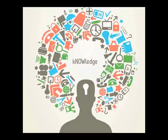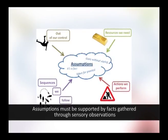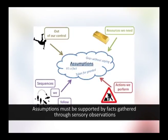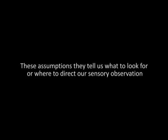In order to gain knowledge about anything, we should already know something about it. If we know nothing at all about the object of our inquiry, we shall never be able to know anything about it. When we are totally ignorant about something and yet want to acquire knowledge through sensory observation, we make certain assumptions and start our inquiry believing these assumptions are true. If they are not supported by facts, we should be ready to abandon them. These assumptions tell us what to look for.